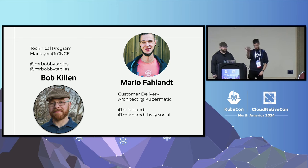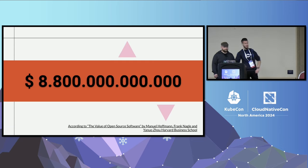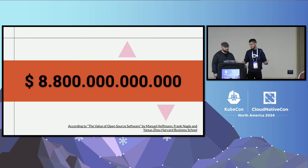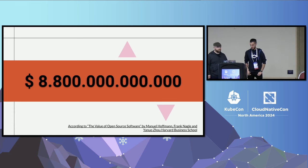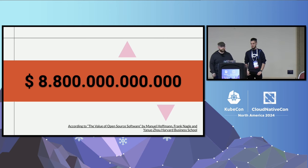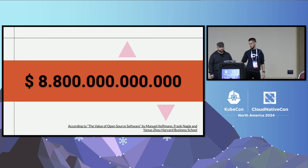So the question has been asked: can we put a price tag on open source? Yes, we can. The price tag is $8.8 trillion. This was calculated by some folks at the beginning of the year and published in a paper at Harvard Business School. They used COCOMO 2 as a method and went over all of the open source projects.